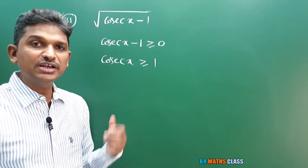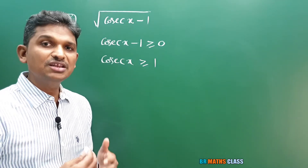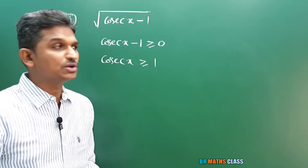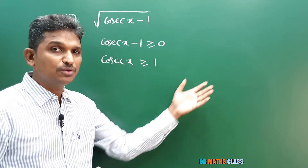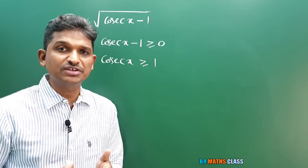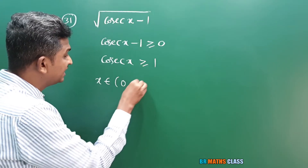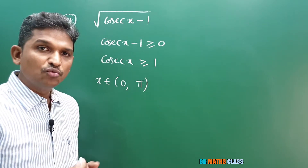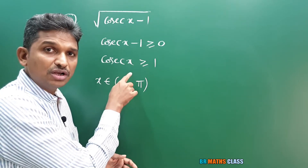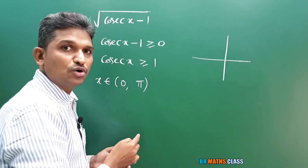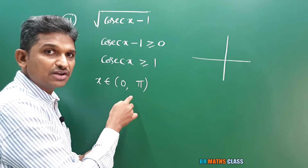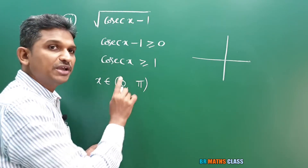We learned that cosecant x is always greater than or equal to 1 or less than or equal to −1. Cosecant x ≥ 1 means all positive values. Cosecant x is positive in the first and second quadrants, corresponding to x in the open interval (0, π). Cosecant 0 is not defined and cosecant π is also not defined, so we use the open interval. This pattern repeats: (2π, 3π), (4π, 5π), and so on.